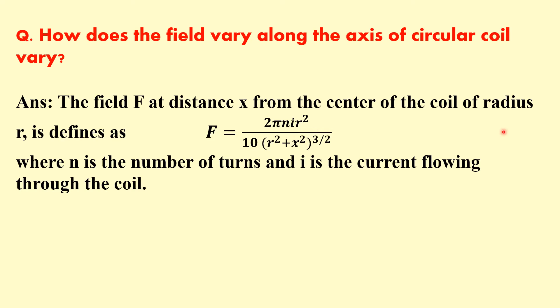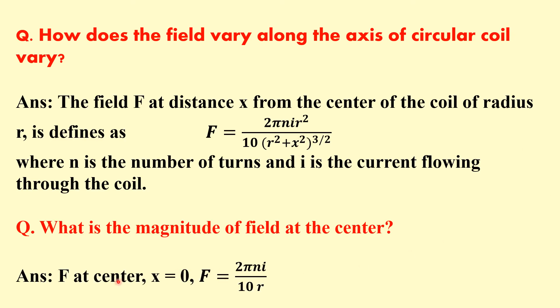This is the magnetic field at a distance x. What is the magnitude of this field at the center? At the center this x will be 0. So if we put x equal to 0 then we will have F equals 2 pi n I by 10 r.